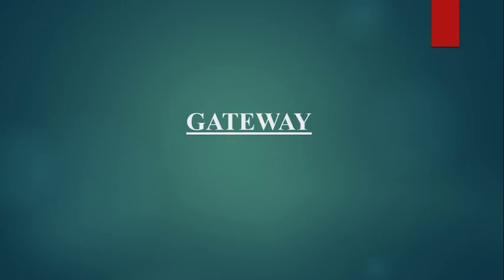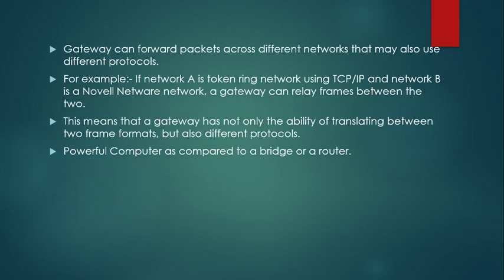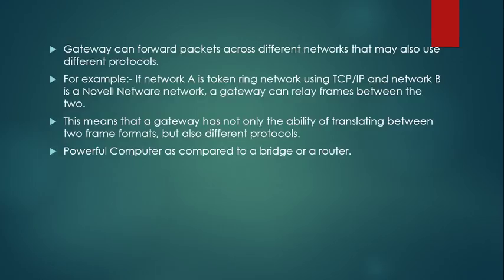Here we move to the gateway. A gateway is a piece of networking hardware used between the nodes. Its basic function is to translate frame formats and protocols between networks. For example, if network A is a TCP/IP-based network and network B is a Novell network, a gateway can relay frames between the two. In other words, if node A has different data frame formats or protocols than node B, a gateway is used between them.